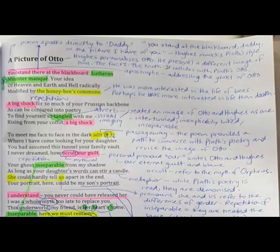This poem speaks directly to Sylvia Plath's Daddy and we can see that in the first line, you stand here at the blackboard. So he's imitating her style of poetry deliberately as a way to make a conversation occur between the two poems. The poem begins with the pronoun you, and the device is apostrophe. So Hughes is addressing the ghost of Otto, Sylvia's father.